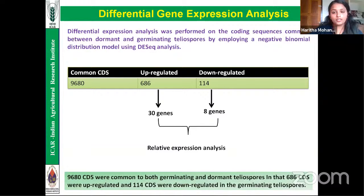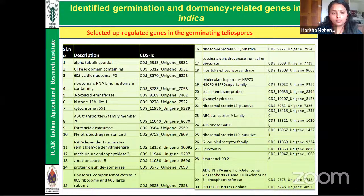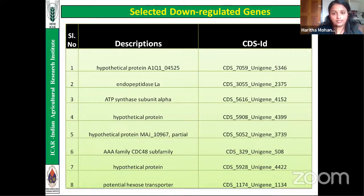Differential gene expression analysis using DESeq on 9,680 CDS common between dormant and germinating teliospores identified 686 upregulated and 114 downregulated CDS. From these, 30 upregulated and 8 downregulated genes were selected for relative expression analysis. Primers for all 38 genes were synthesized using NCBI Primer-BLAST software.